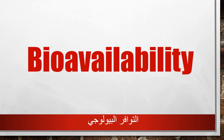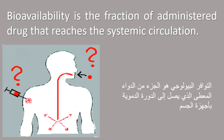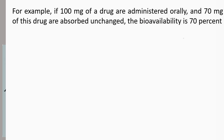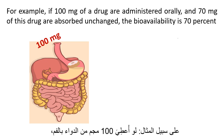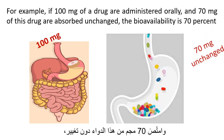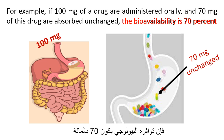Bioavailability is the fraction of administered drug that reaches the systemic circulation. For example, if 100 milligrams of a drug are administered orally and 70 milligrams of this drug are absorbed unchanged, the bioavailability is 70%.